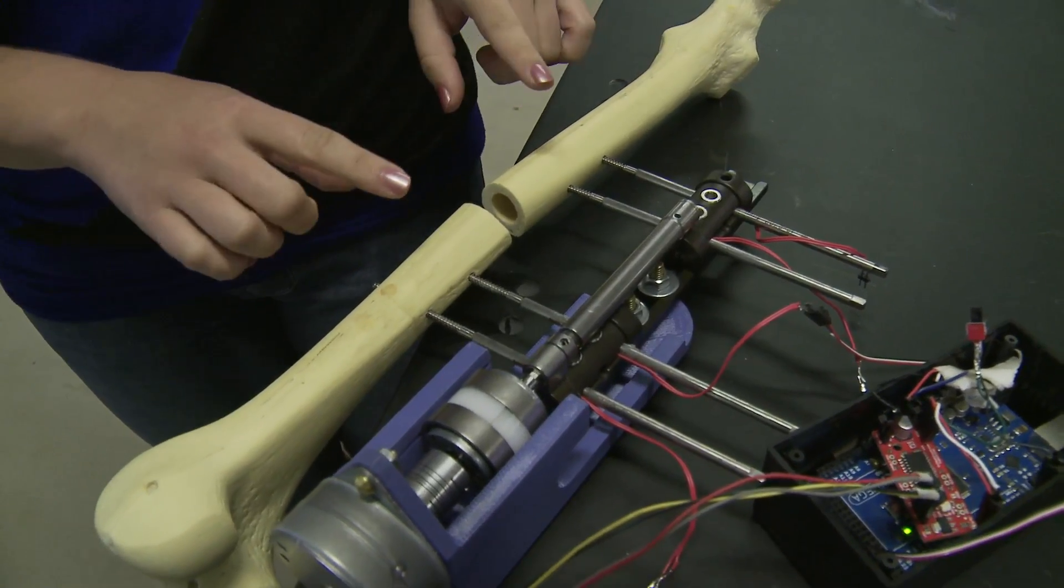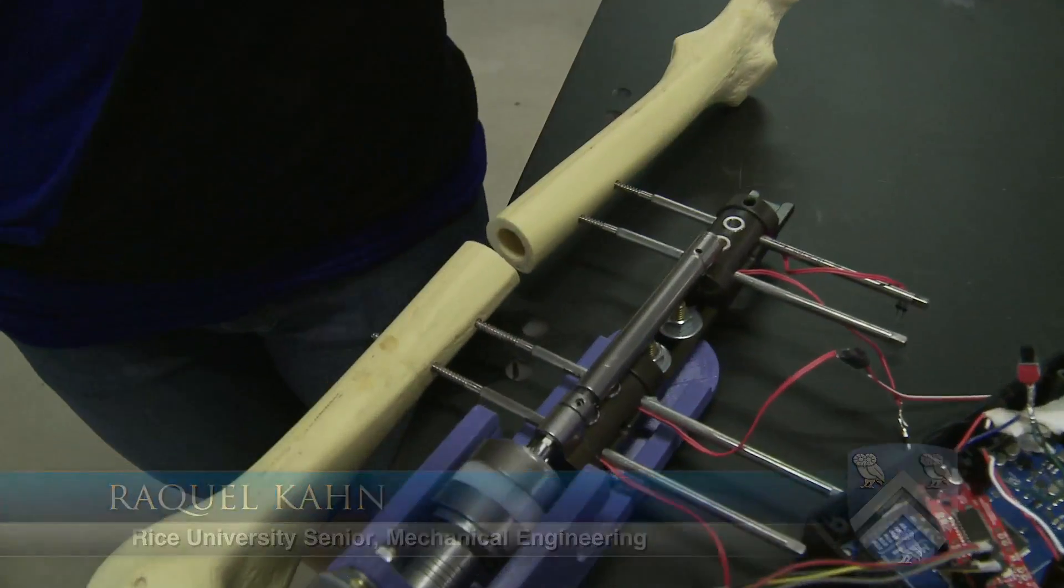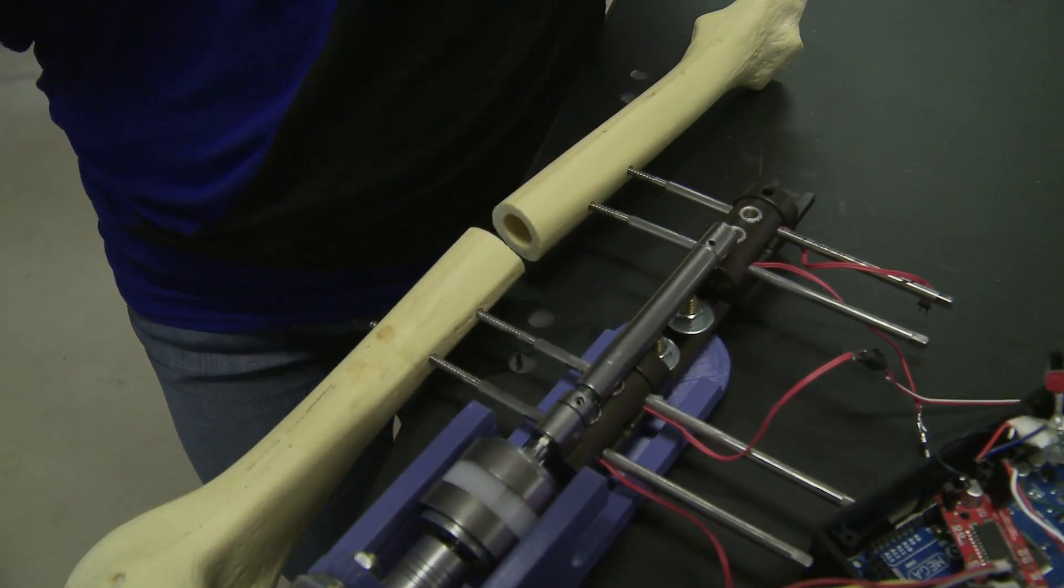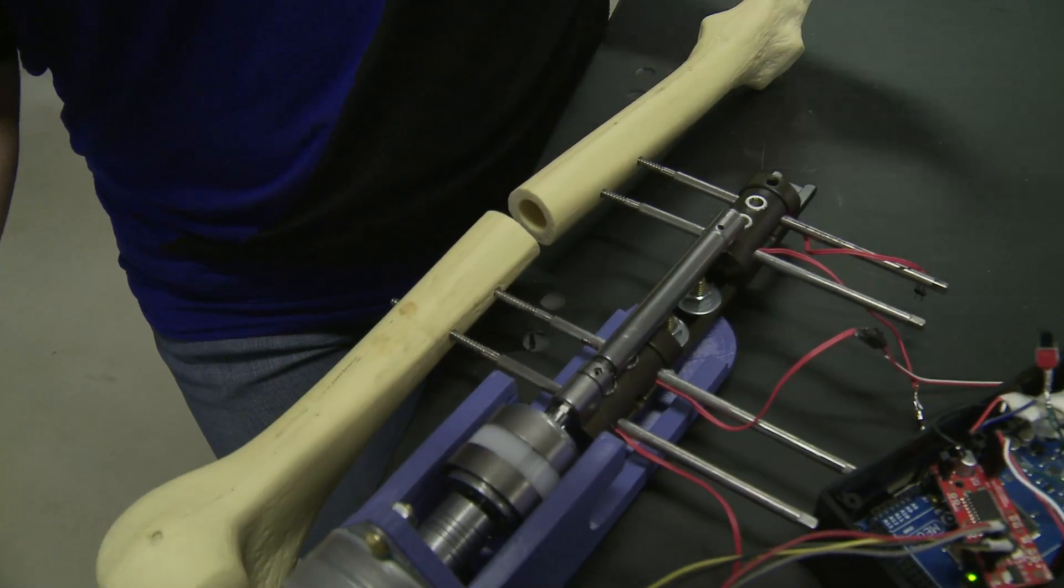So what you're seeing here is what we're modeling as a leg bone. Say this leg bone were shorter than the other of your two legs, you would want to do this procedure. It's called distraction osteogenesis, but basically that's just to make the leg longer so that it's the same length as your other one.